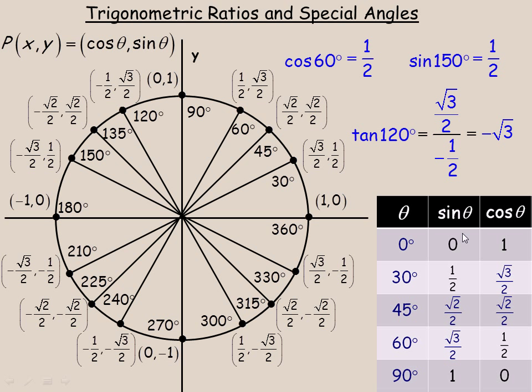And in order to use this table to be able to duplicate it, I mean, you can memorize the whole thing, but you put in the left-hand column here the angles 0, 30, 45, 60, and 90 degrees.